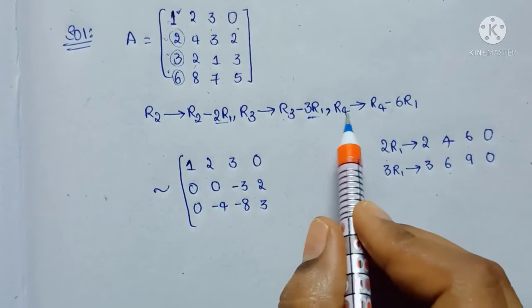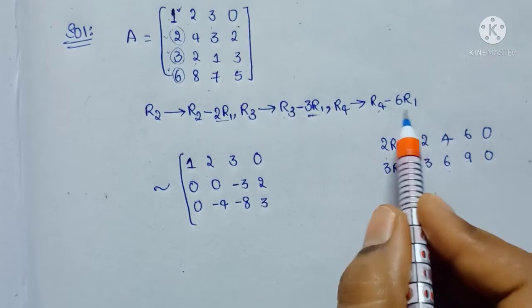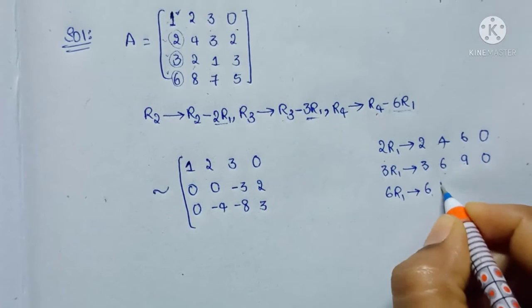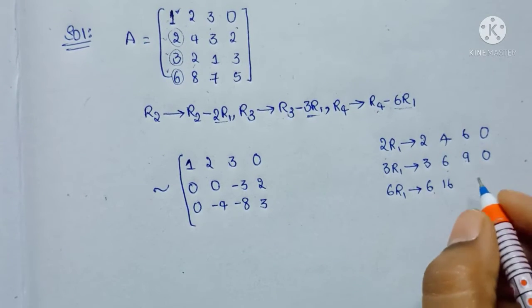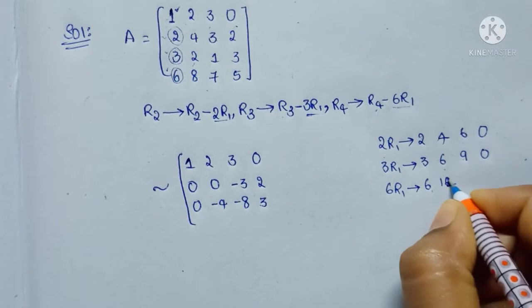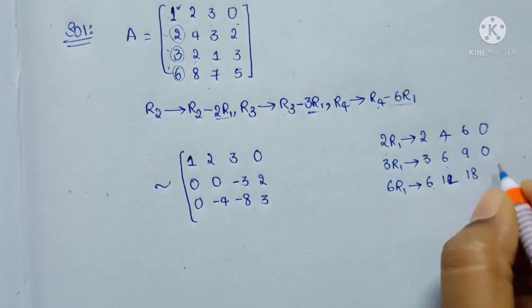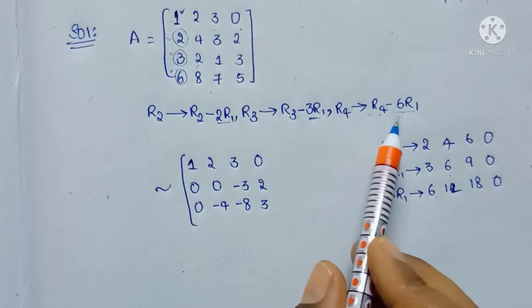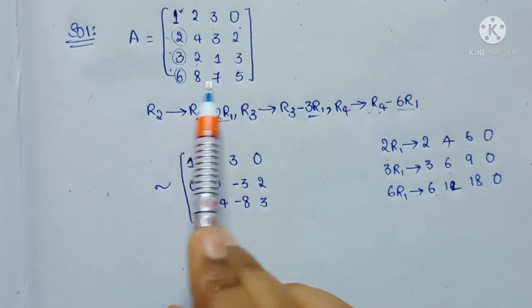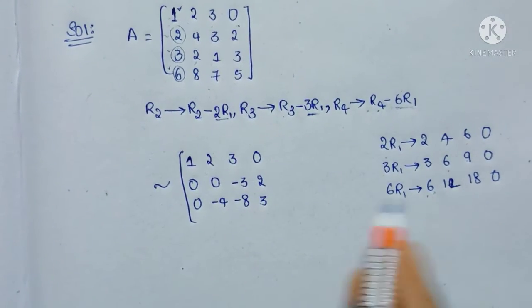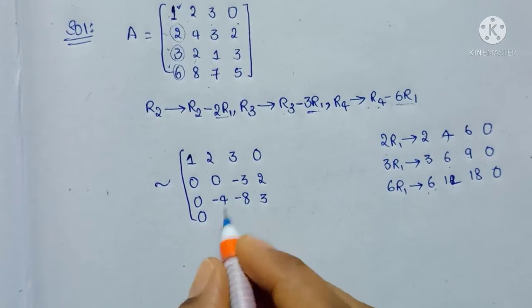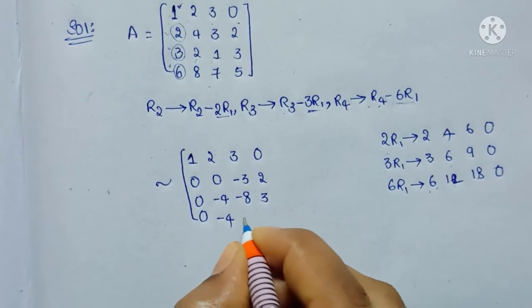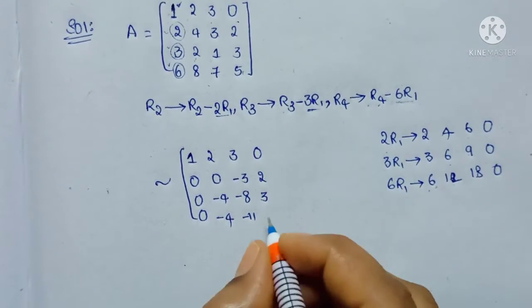For row 4, R4 is converted into R4 minus 6R1. 6R1 gives 6×1=6, 6×2=12, 6×3=18, 6×0=0. So R4 minus 6R1: 6−6=0, 8−12=−4, 7−18=−11, 5−0=5.